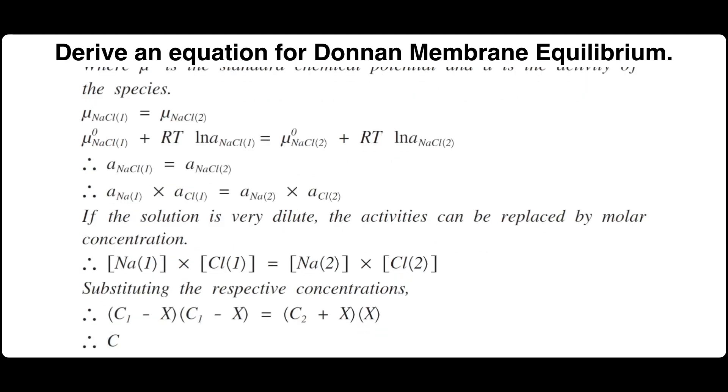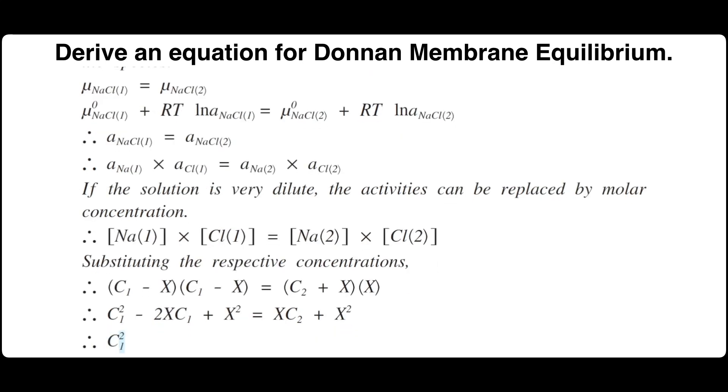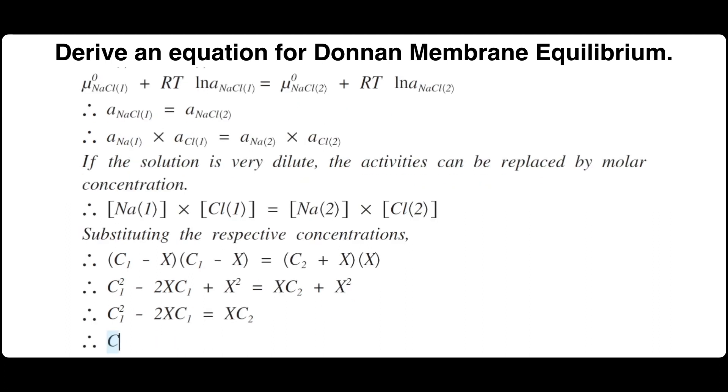Let's simplify this equation. C1 squared minus 2XC1 plus X squared equals XC2 plus X squared. Let's cancel X squared. We get C1 squared minus 2XC1 equals XC2 or C1 squared equals XC2 plus 2XC1.